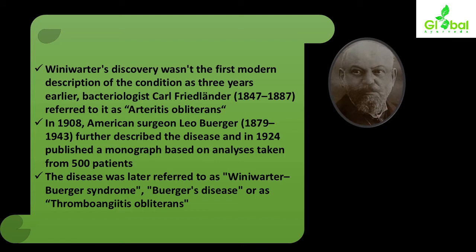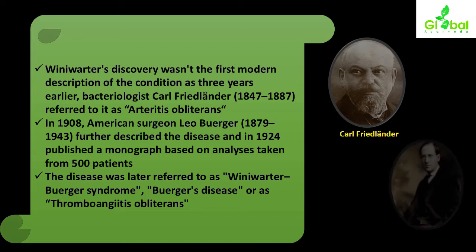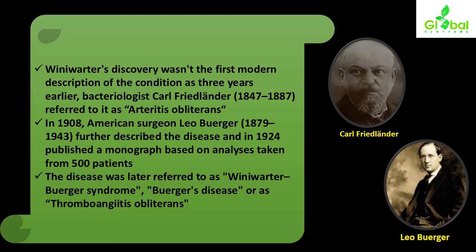Von Winiwarter's discovery was not the first modern description of the condition, as three years earlier bacteriologist Carl Freilander had referred to it as arteritis obliterans. In 1918, American surgeon Leo Buerger further described the disease, and in 1924 published a monograph based on analysis of 500 patients. The disease was later referred to as Winiwarter-Buerger syndrome, Buerger's disease, or thromboangiitis obliterans.